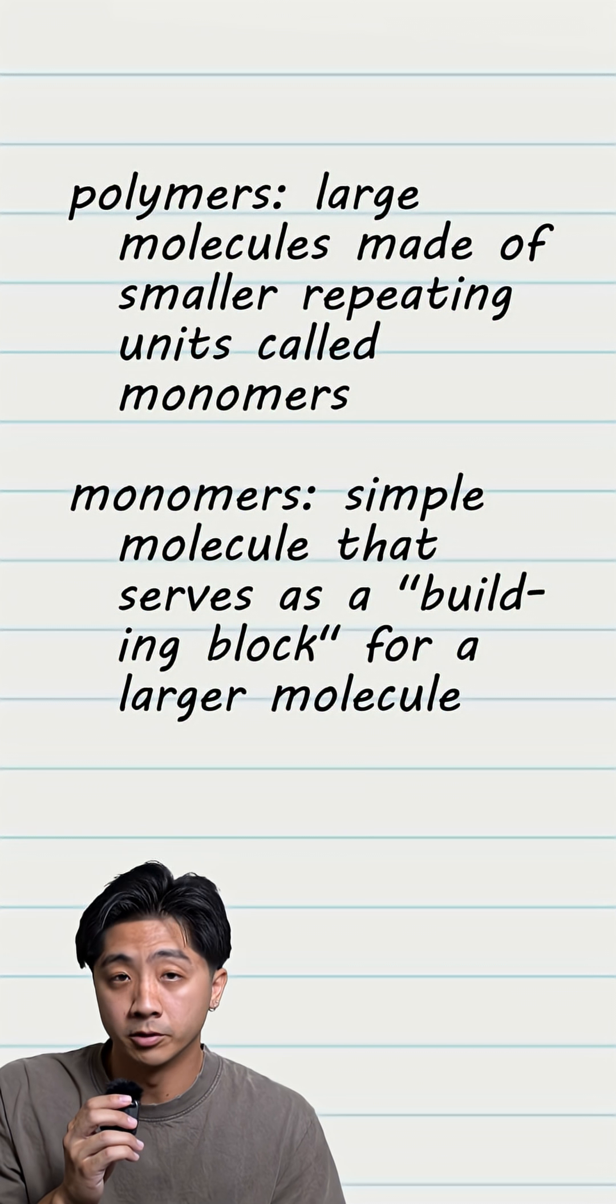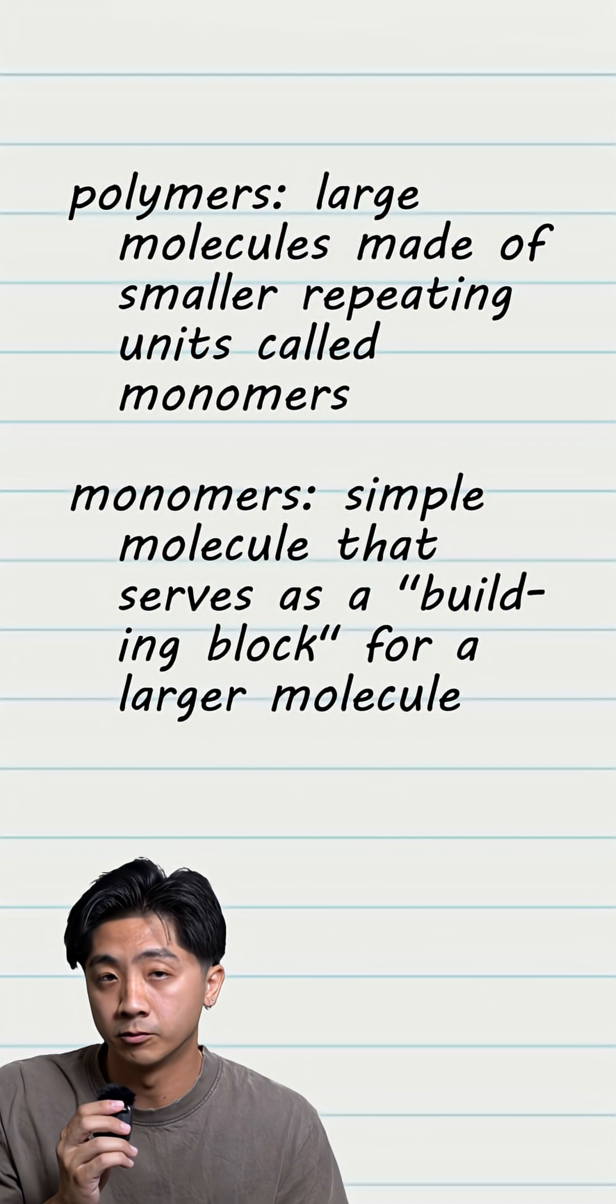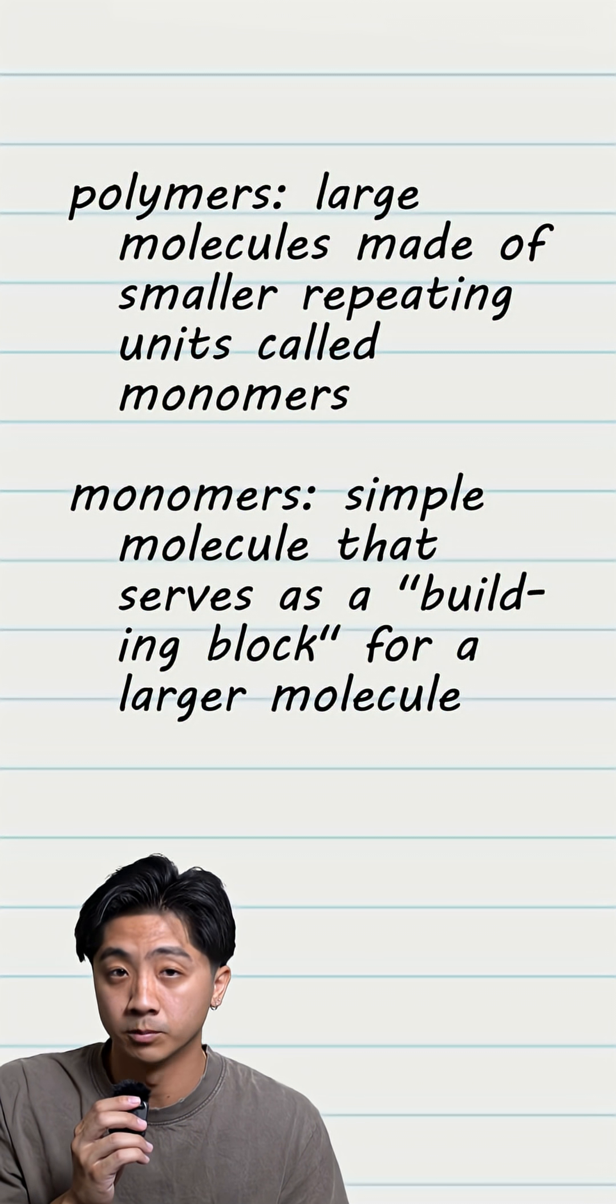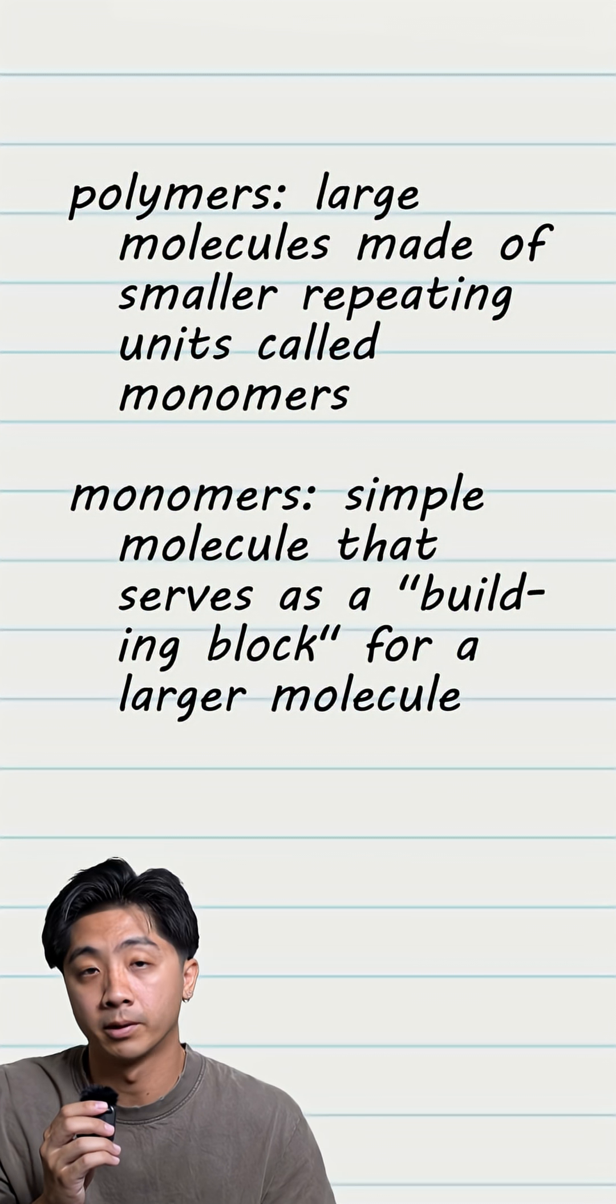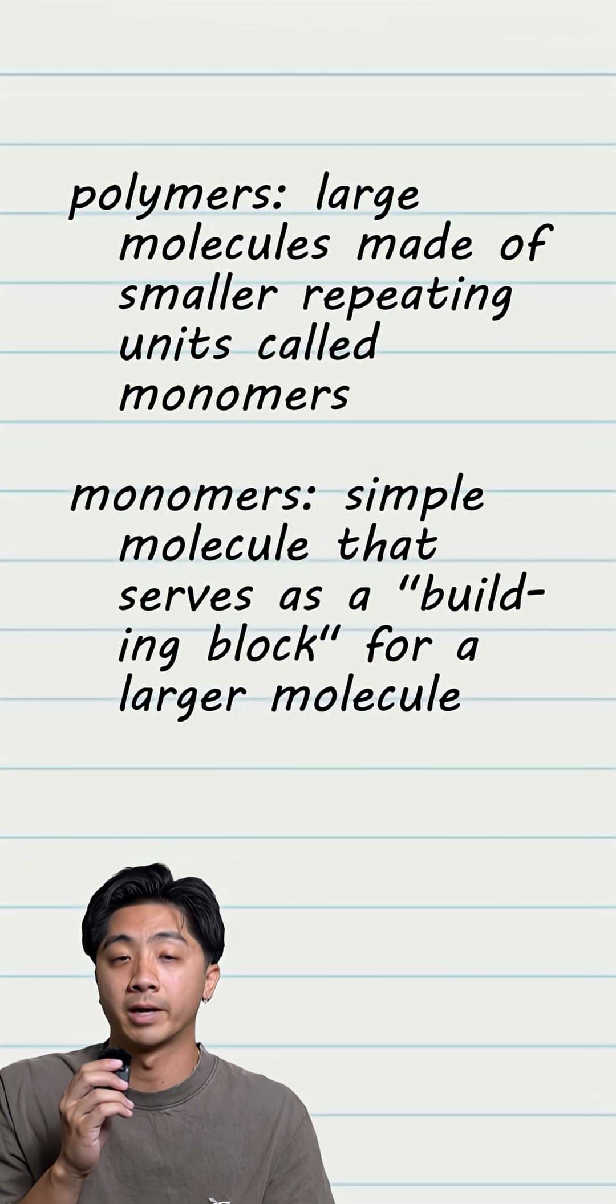Macromolecules are known as polymers, large molecules made out of repeating smaller molecules called monomers. These monomers can be put together or broken apart to build different types of that macromolecule.